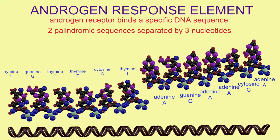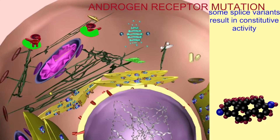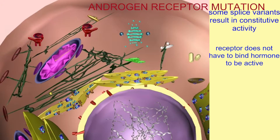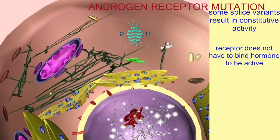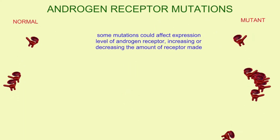Mutations in the DNA binding region affect the ability of the receptor to bind to the androgen response elements. Some splice variants can result in constitutive activity, meaning the receptor does not have to bind a hormone like testosterone in order to go to the nucleus and activate transcription.